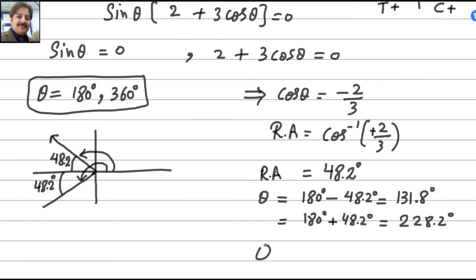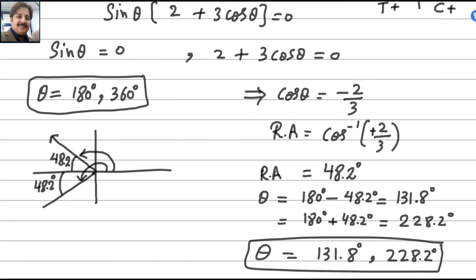So we get two answers from the cosine factor: 131.8° and 228.2°. Together with 180° and 360° from the sine factor, these are all the answers for the first part.